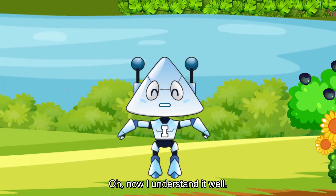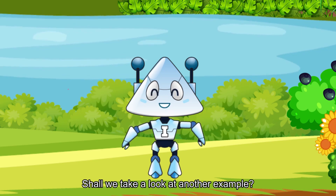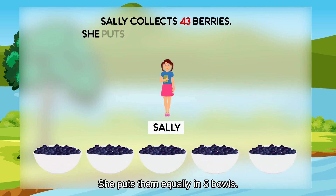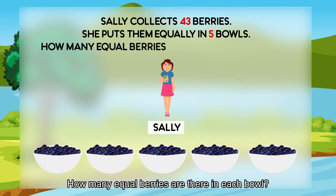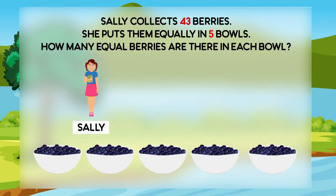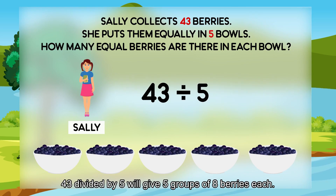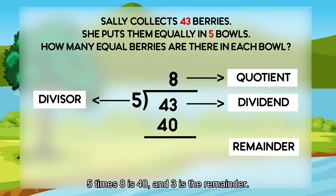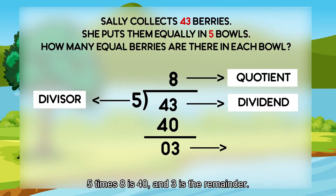Now I understand it well. Shall we take a look at another example? Sally collects 43 berries. She puts them equally in five bowls. How many equal berries are there in each bowl? 43 divided by 5 gives 5 groups of 8 berries each. 5 times 8 is 40, and 3 is the remainder.